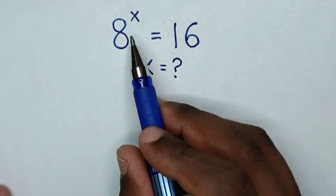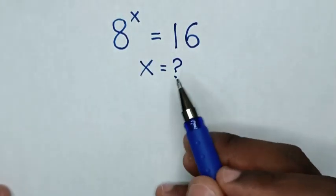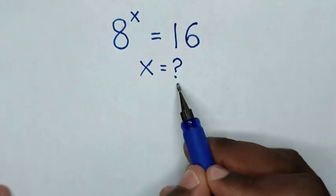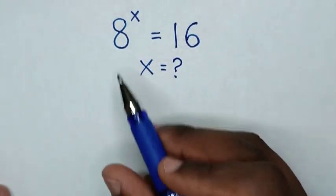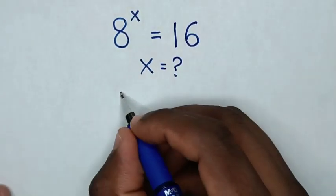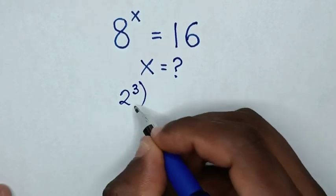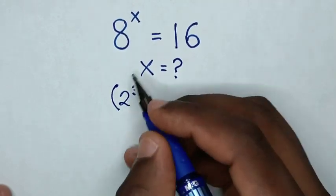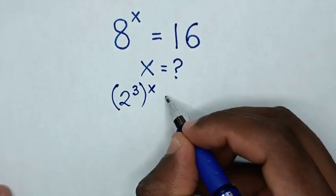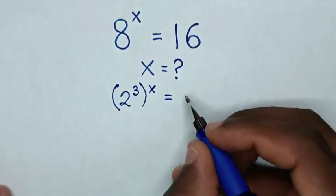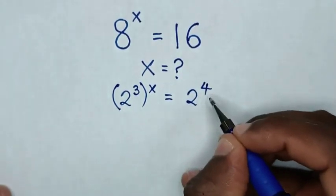How to solve 8 power x is equal to 16, to find the value of x. First, 8 is the same as 2 power 3, then bracket power of x, then is equal to 16, which is the same as 2 power 4.